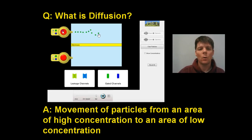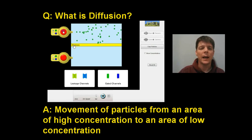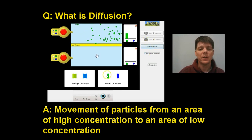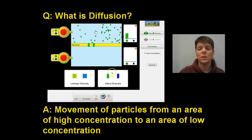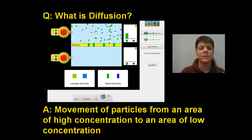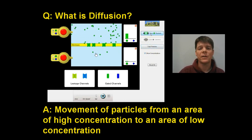What I'm setting up here is just a quick animation using PHET. We have a membrane here, and this space represents the outside of the cell, and this space here is the inside of the cell. We're setting up a high concentration of green particles above that cell membrane — this is outside of the cell. Below the cell membrane is inside of the cell.